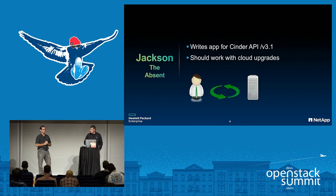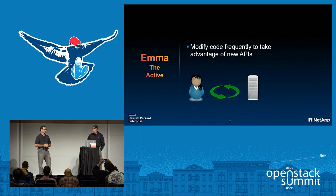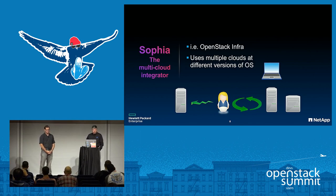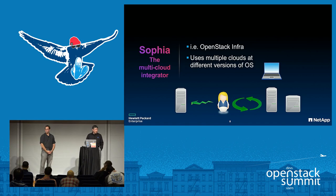We needed a mechanism to be able to change our API and still maintain backwards compatibility. Then there's the opposite end of the spectrum — we call Emma the active. That's someone who's consuming new APIs as they come out, very interested in the new APIs, willing to write the code to toggle on the logic. Sophia is similar to Emma, although in her case she's writing a cloud application that has to run against multiple clouds, so she needs her application at runtime to be able to inspect what it's talking to and react appropriately.